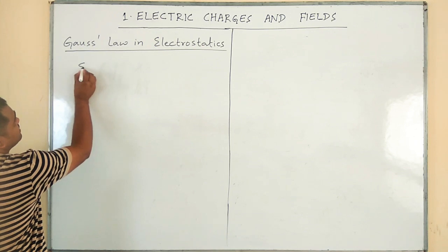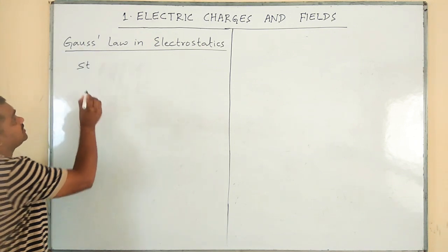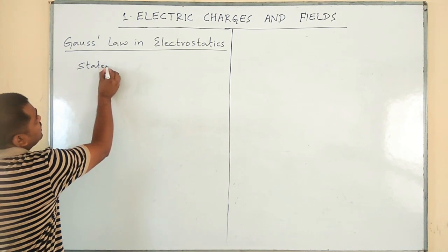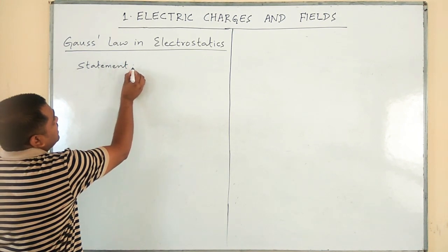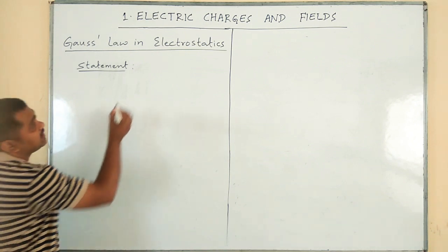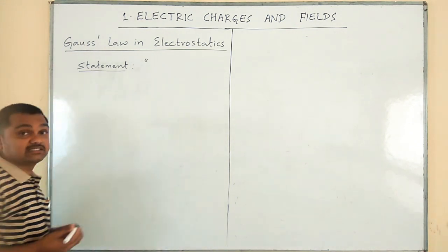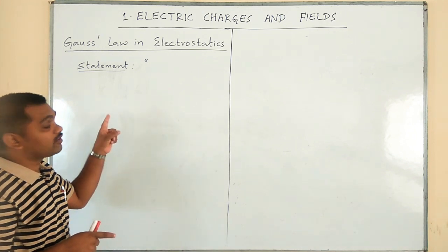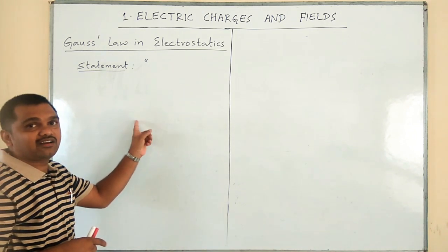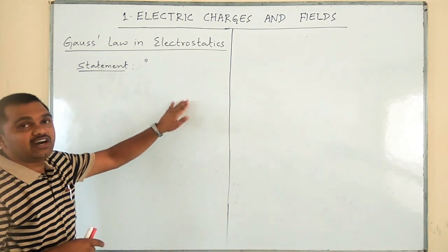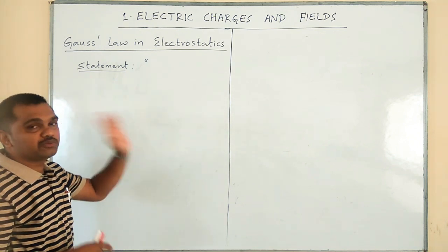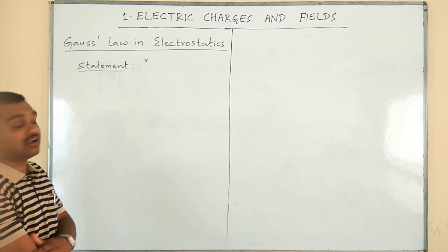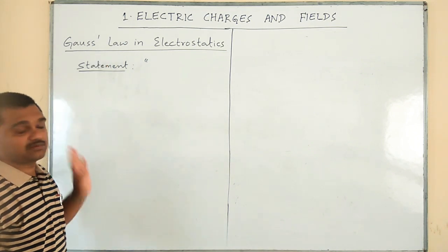Gauss is the name of a person who introduced this law. The statement of Gauss law says that the total electrical flux through any closed surface in free space is equal to 1 over epsilon times the net charge or total charge enclosed by the surface. Mr. Gauss gave this statement.